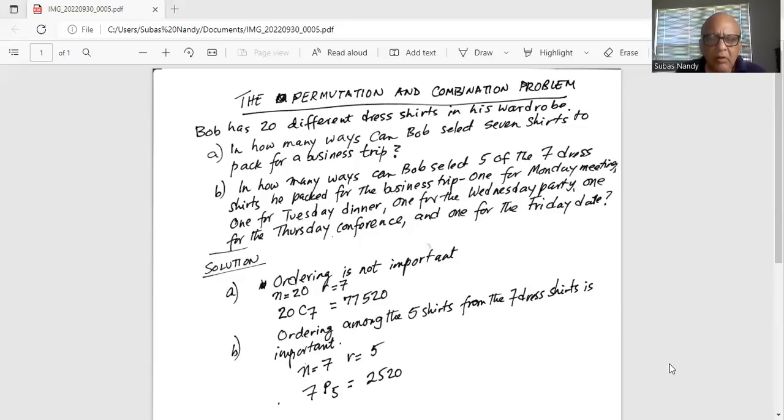So in part A, ordering is not important. We are going to use 20C7. N is 20, C is seven. So out of 20 items, we are going to select seven items. In how many ways can we arrange seven items without regards to order? That is 20C7.